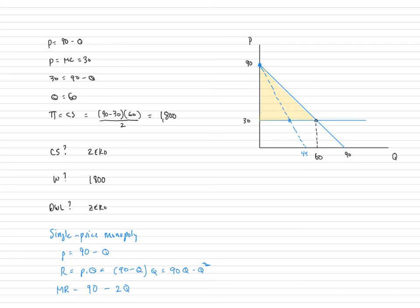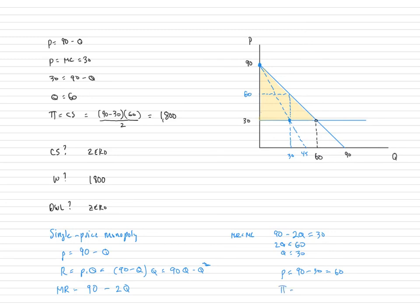Setting marginal revenue equal to marginal cost: 90 minus 2Q equals 30, so 2Q equals 60, and Q equals 30. That's the quantity the single price monopoly would produce. Going up to the demand curve to find the optimal price: P equals 90 minus 30, so price equals 60. The profit of this single price monopoly is (price minus average cost) times quantity: (60 minus 30) times 30, which equals 900.